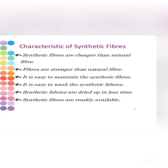Let's sum up the characteristics of synthetic fibers. Synthetic fibers are cheaper than natural fibers — you may have noticed a price difference in shops between natural and synthetic cloth. They dry up quickly, which is why during the rainy season we prefer synthetic umbrellas over cotton ones. They are less expensive, readily available, easy to maintain, and easy to wash.